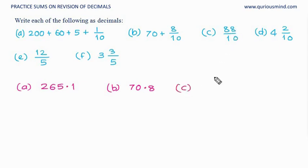C, 88 upon 10. 88 upon 10 can be represented as in mixed fraction 8, 8 upon 10, which becomes 8 whole and 8 tenth. 8.8.